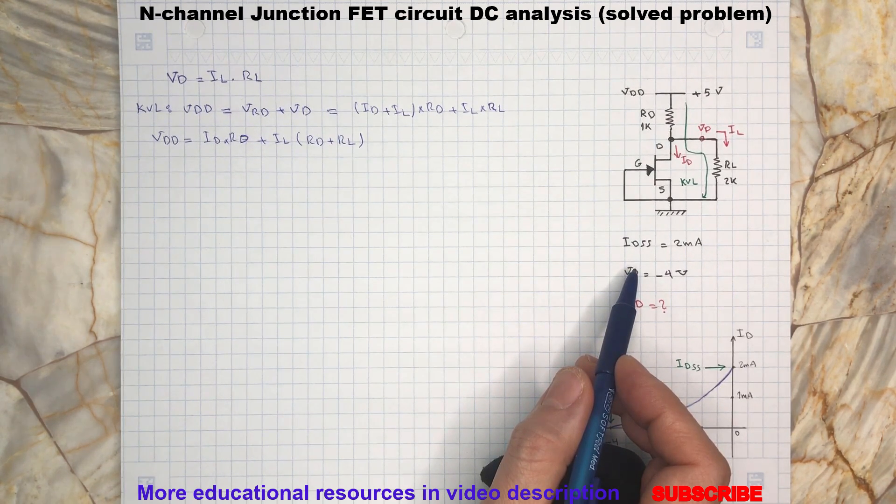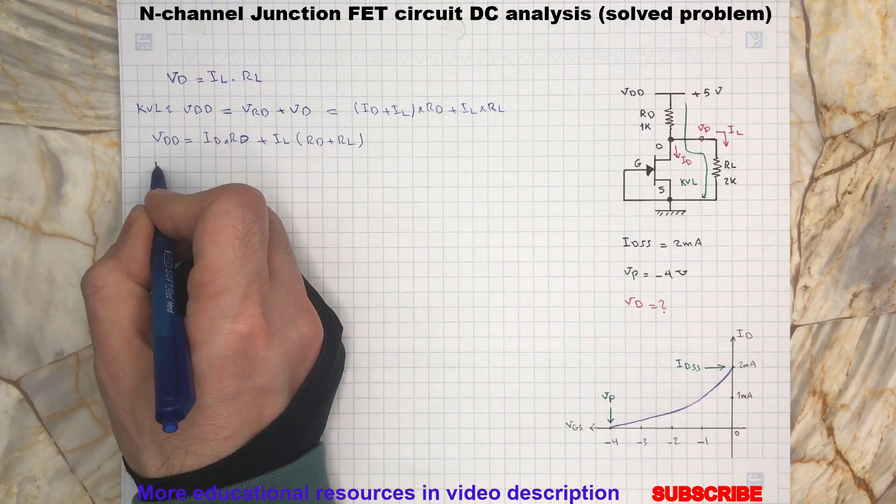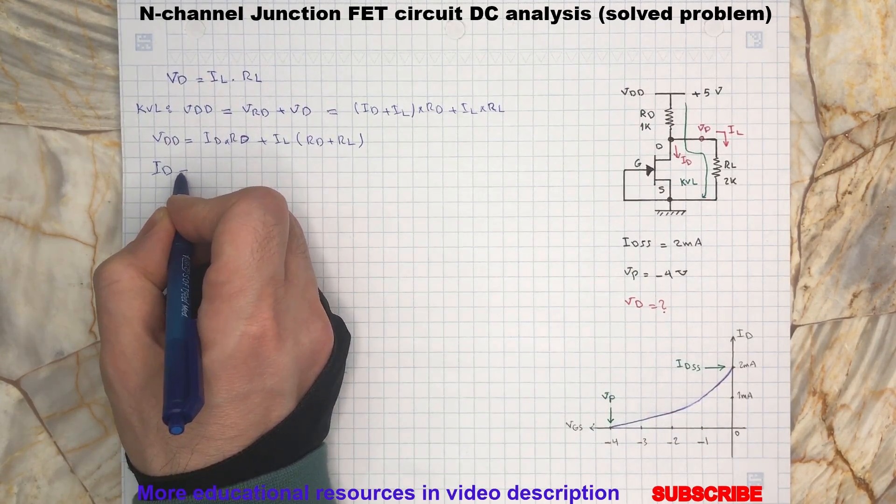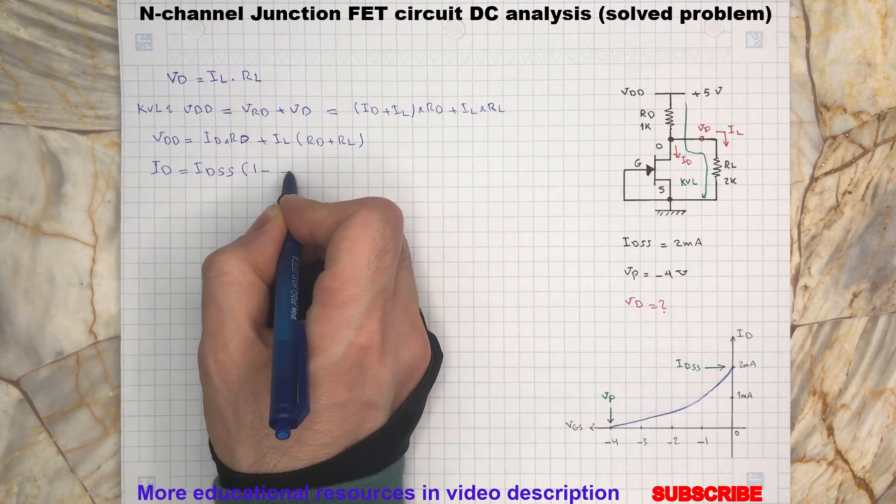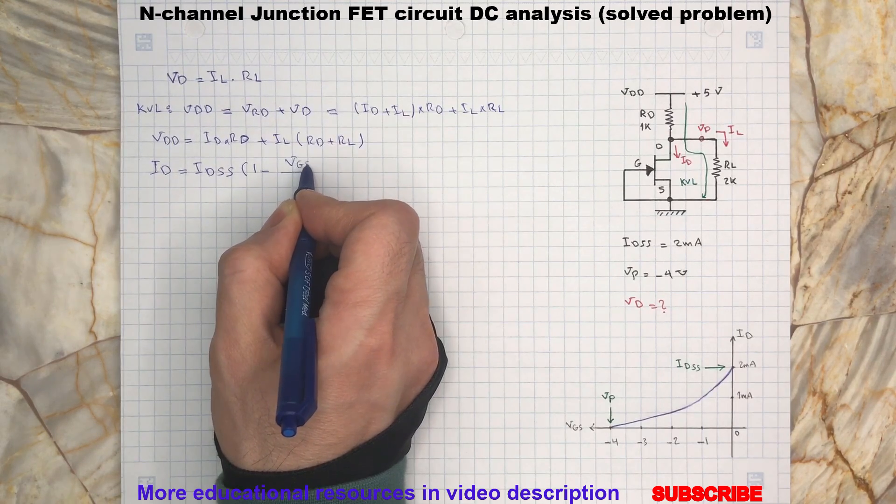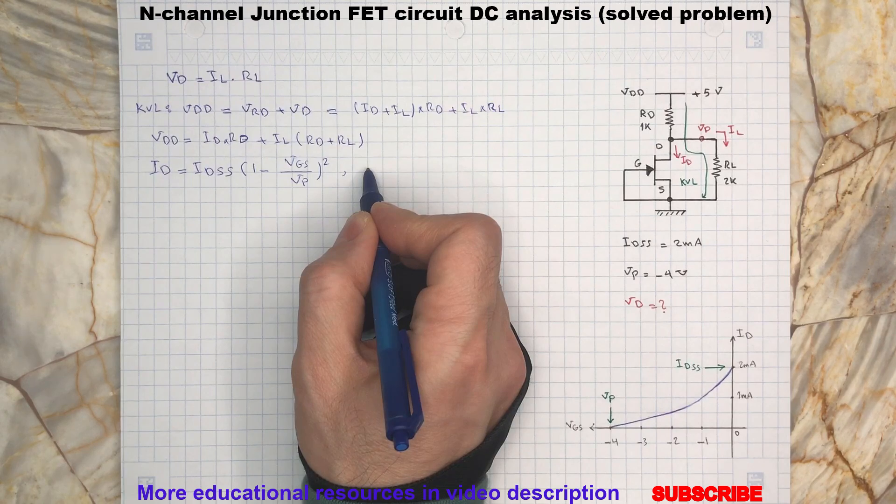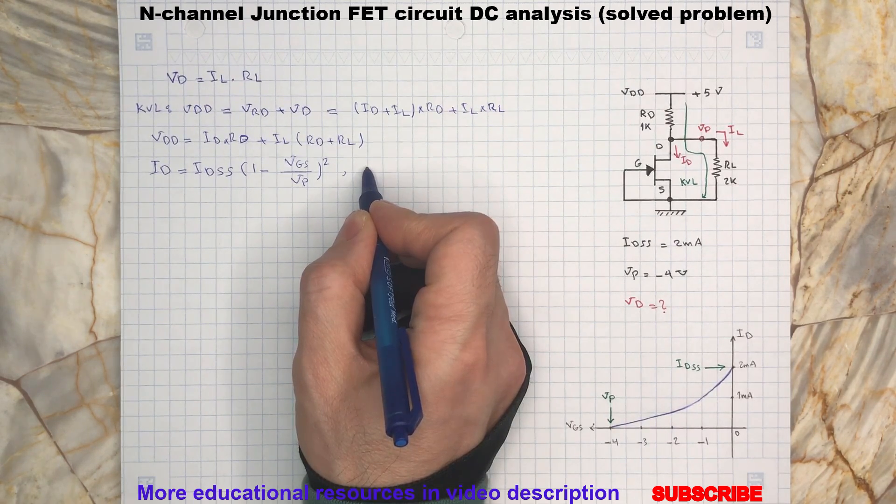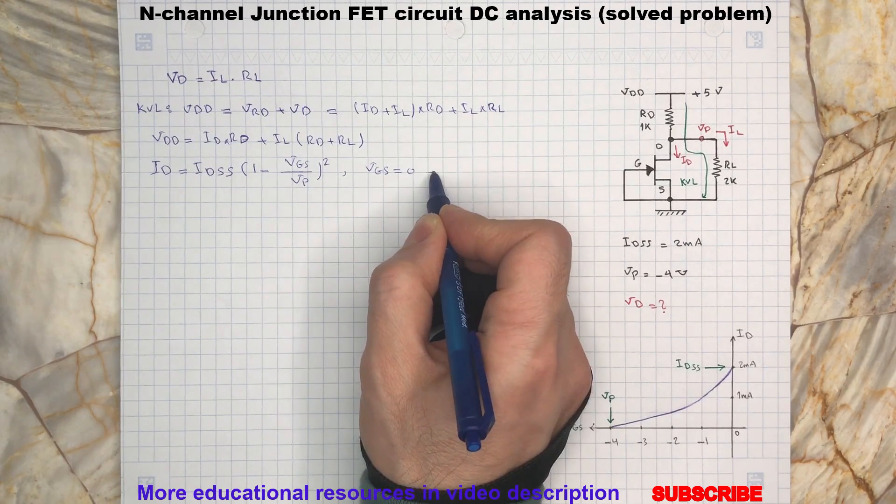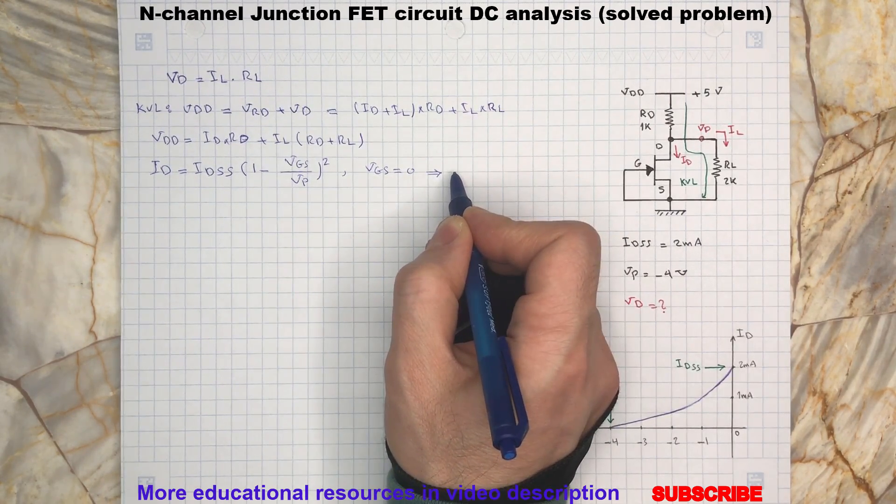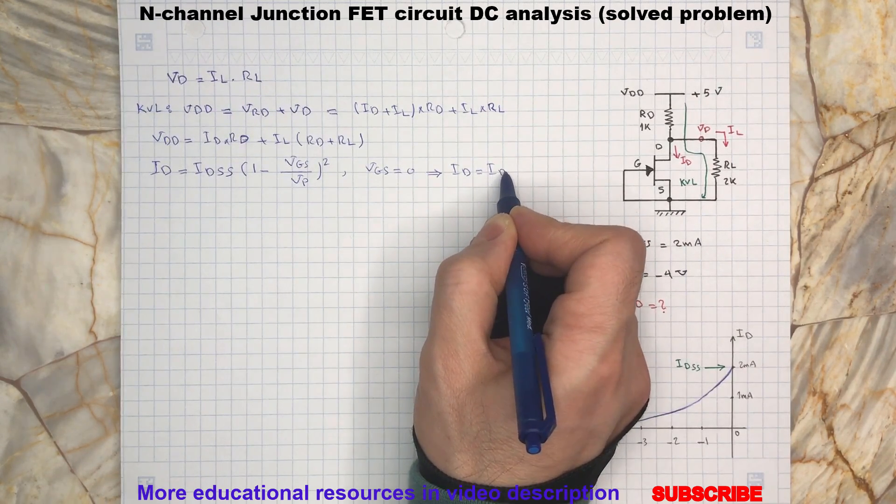the drain current in a JFET can be calculated by ID = IDSS(1 - VGS/VAP)². When VGS equals zero, then ID equals IDSS.